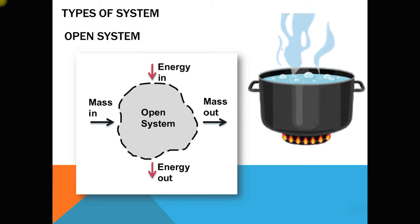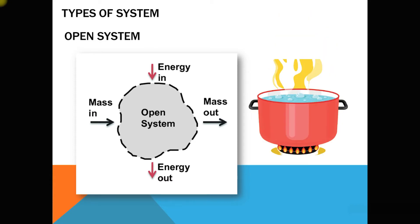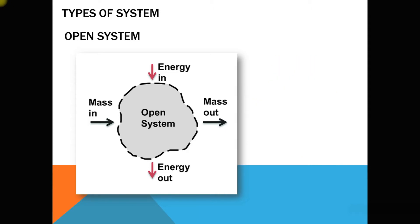When we supply heat to the open vessel filled with water, the water starts to boil. At that point there is a transfer of heat as well as a transfer of mass, because the vessel is open and the water starts to evaporate. The steam generated is transferred to the atmosphere — to the surroundings. So this is an example of an open system, where both mass and energy cross the boundary.